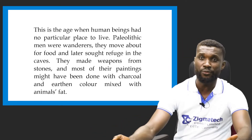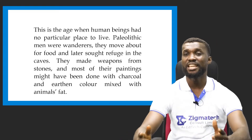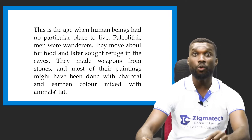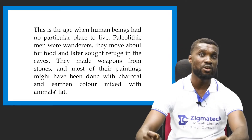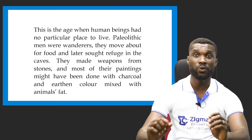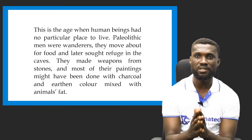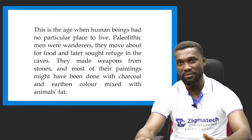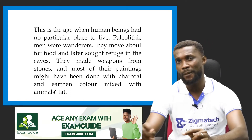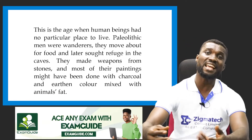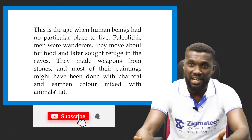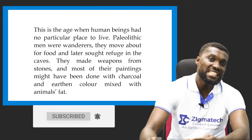They moved about searching for food and later sought refuge in caves. They made weapons from stone — remember, I called the Paleolithic period the Old Stone Age. They made their weapons and tools from stone because there was no iron, no metal, no bronze — just wood and stone. Most of their paintings were done with charcoal and earthen colors mixed with animal fat. They made paintings with earthen clay, leaves, or even the blood of animals mixed with fat. That is what they used to create their paintings.